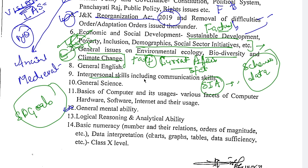Then, interpersonal skills including communication skills. From this section you will get fairly simple questions — some theories on communication skills that you will cover. Then there are general science questions — like vitamins, minerals, deficiencies, their names, communicable and non-communicable diseases. Also, which disease is important, which scientist invented what — all those things come here.